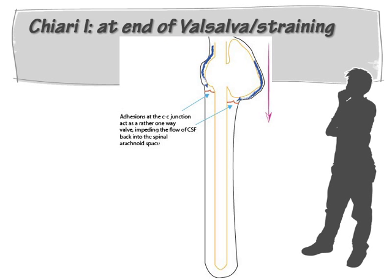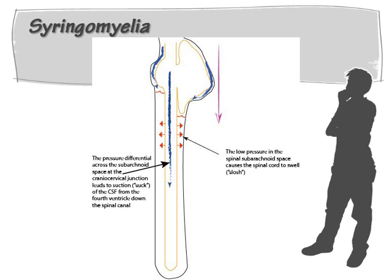However, the return of CSF from the cranial subarachnoid space into the spinal subarachnoid space is impeded by adhesions or the early descent of tonsils at the cranio-cervical junction. This leads to a momentary increase in intracranial pressure compared to the pressure in the spinal compartment. This in turn leads to a vector of force that pushes the tonsils further down, exacerbating the Chiari malformation. According to Bernard Williams, the decrease in pressure within the spinal subarachnoid space would cause suction on the spinal cord, leading to creation of a syrinx.